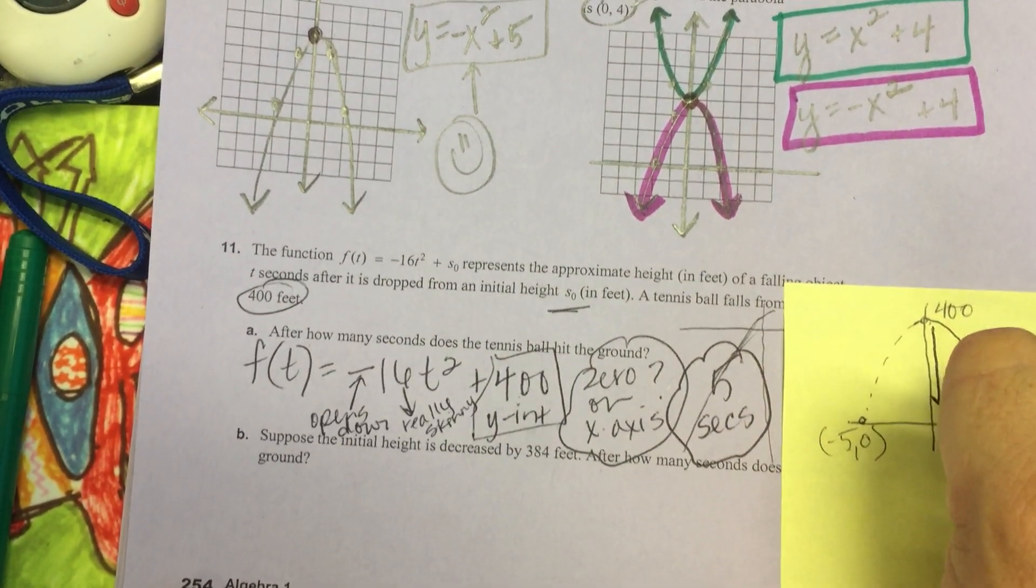Then it says suppose the initial height is decreased by 384 feet. Okay, so now where are they dropping it from if they've gone and brought this down 384 feet? What's 400 minus 384? Somebody go find that. So really we're going f of t equals negative 16t squared plus 400, but we've got to take that 384 away. What's left? Perfect. F of t equals negative 16t squared. Now we're from a height of 16 feet. They're asking us the same question. If I'm dropping from a height of 16 feet, my y-intercept, that height.